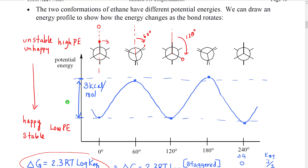When we look at the potential energy axis, down at the lower part of the axis represents a low amount of potential energy, whereas up here represents a high amount of potential energy. There is an inverse relationship between low potential energy and stability: a low potential energy indicates a high amount of stability, whereas a high potential energy indicates a low amount of stability. This relates to the definition of potential energy — potential energy is defined as the potential for a system to change.